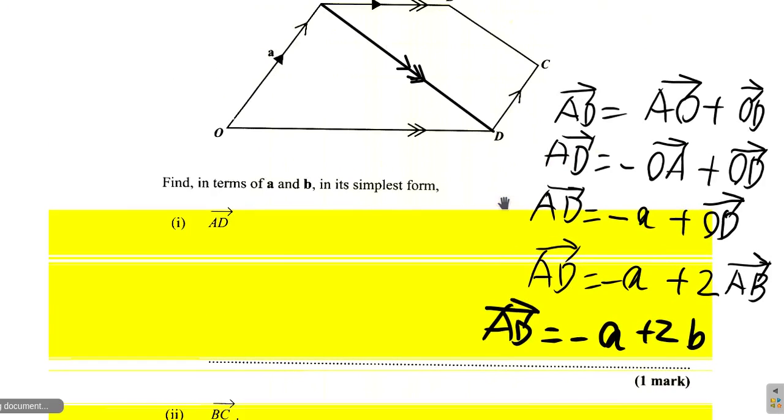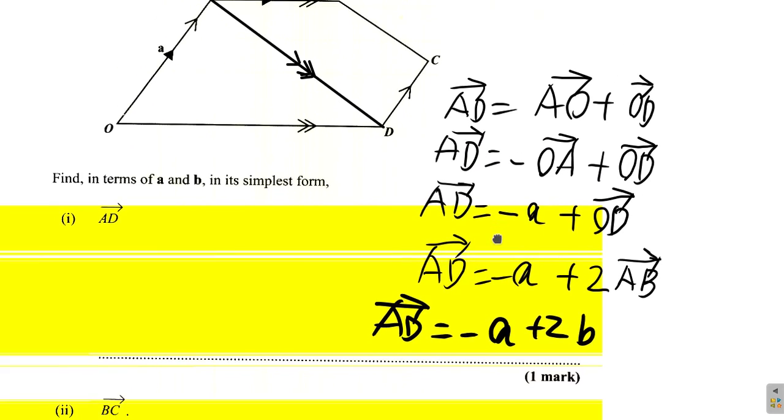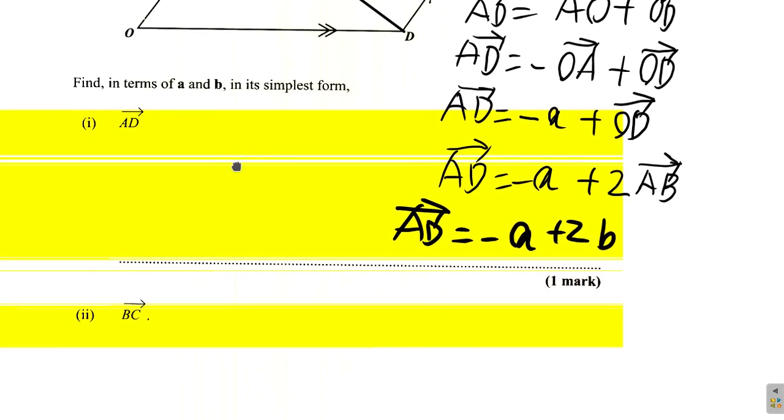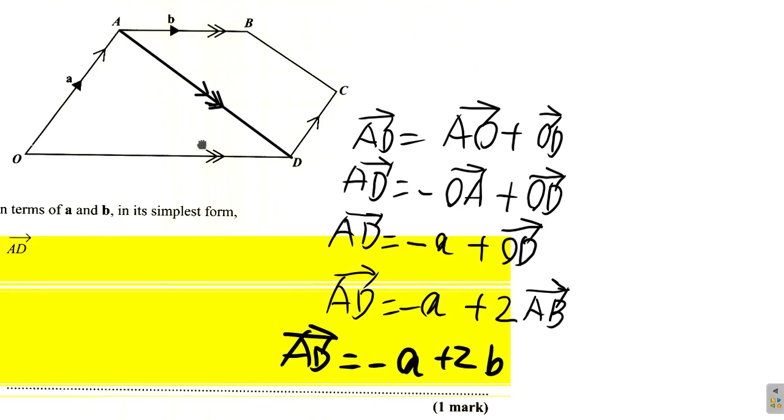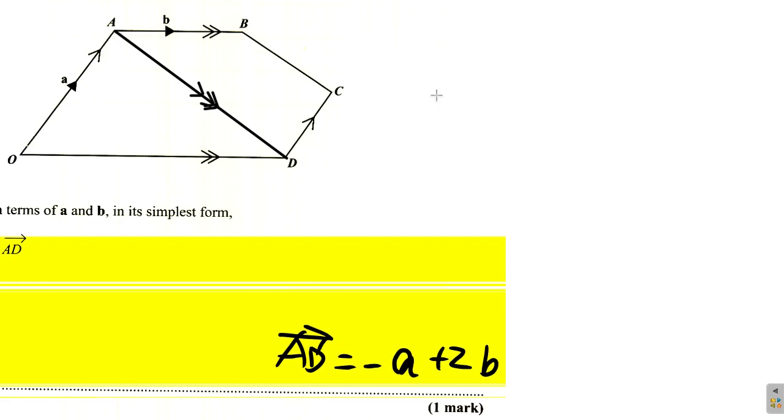After that they say BC. We're going to use some space. We need some space here. Now BC. For BC, what we could say, if we go from B to C, is we're going from B to A, then A to O, then O to D, then D to C. We could go from B to A then D to C, whichever one we want.